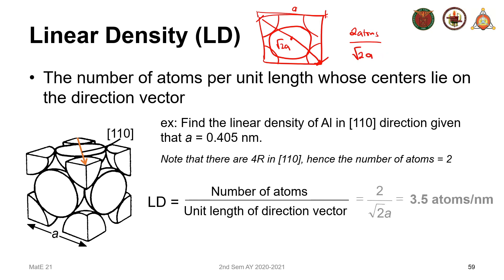Square root of 2a is 0.405 nanometers. If you did the calculation, this would be equal to 3.5 atoms per nanometer. So that would be the linear density of the [110] direction in our aluminum.